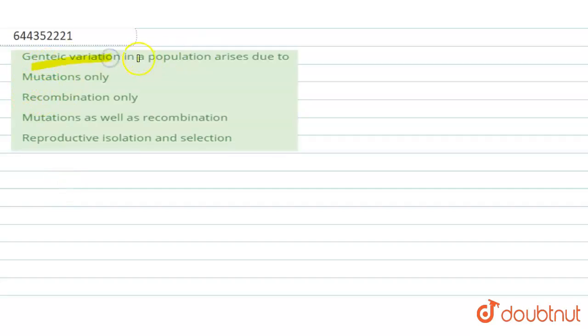Genetic variation in a population arises due to - so four options are given here as mutations only, recombination only, mutations as well as recombination, or reproductive isolation and selection. Let's see what will be the correct answer.